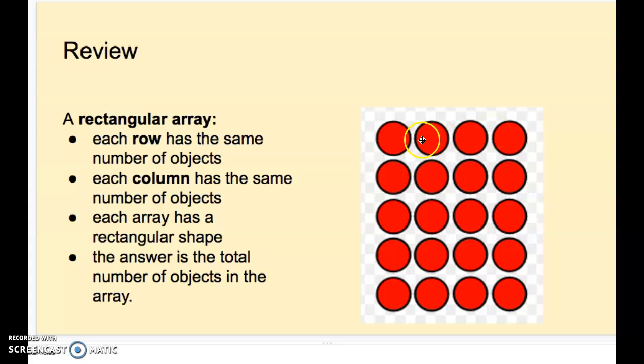So for this rectangular array, it looks like I have one, two, three, four, five rows, and one, two, three, four columns. So this would be a five by four array. And I know that five times four equals 20.